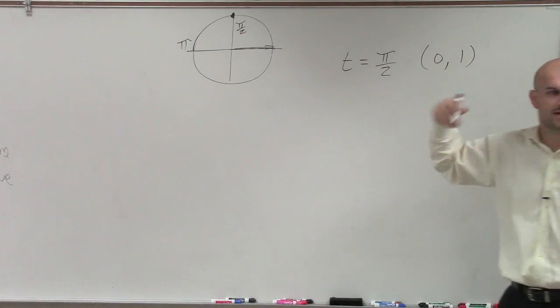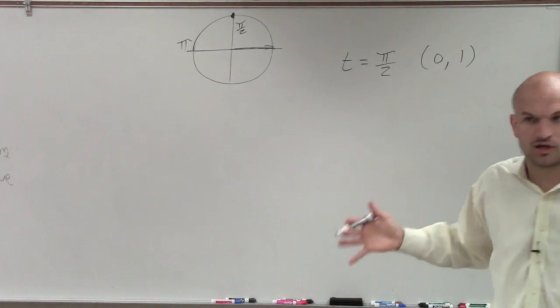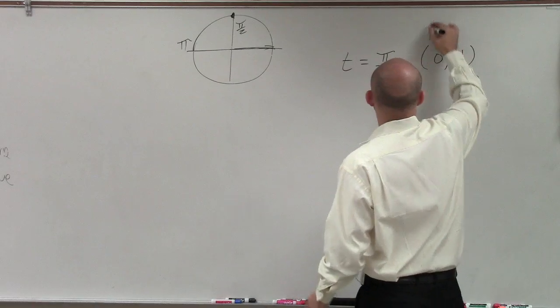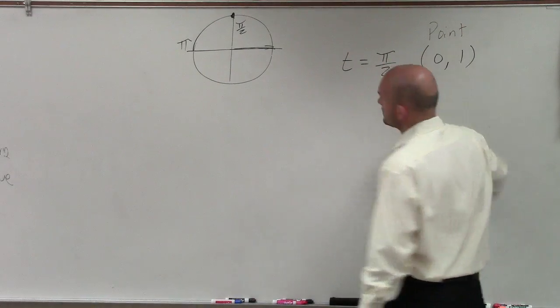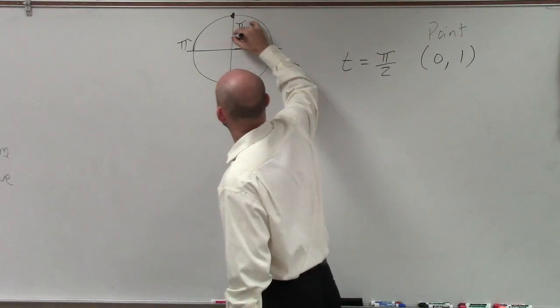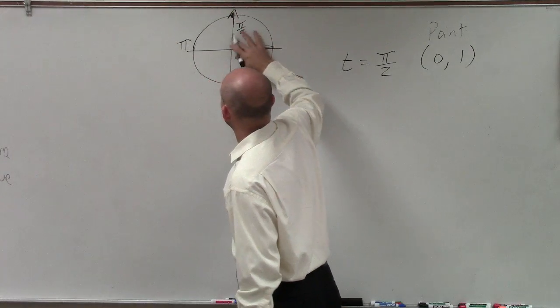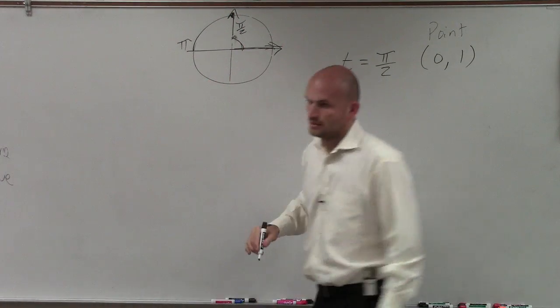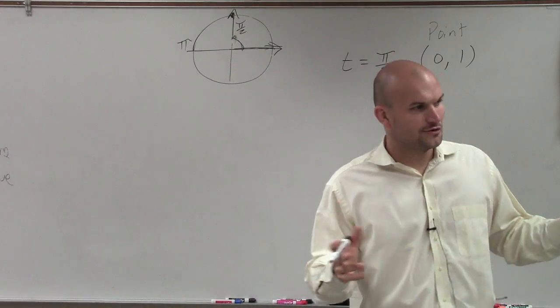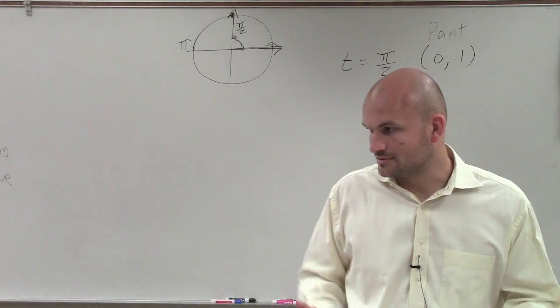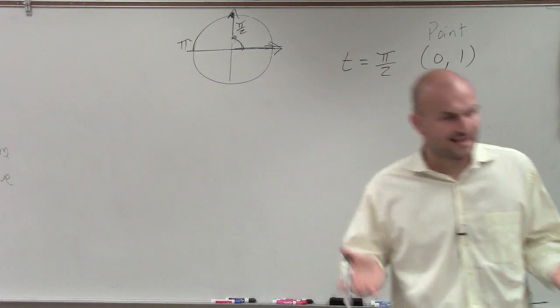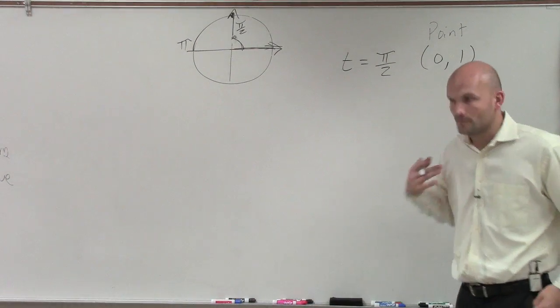That's the point that I'm going to use. Whenever I have to evaluate all six trigonometric functions, the first thing you guys want to do is make sure you can draw the angle. Draw what the angle looks like. Second step, find the point on the unit circle that the angle is relating to.